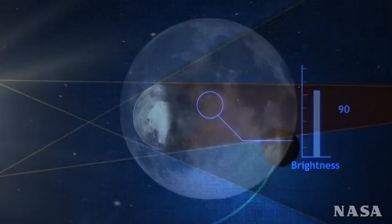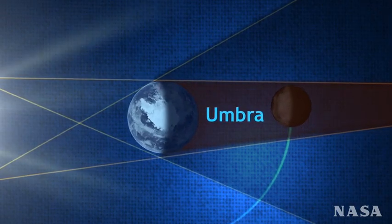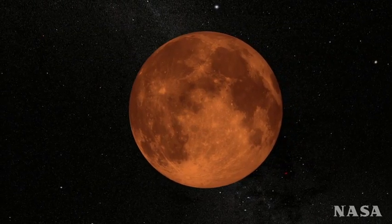As the moon continues along its path, however, it enters what's called the umbra, where all direct light from the sun is blocked. But if the sun is blocked, why does the moon turn red?